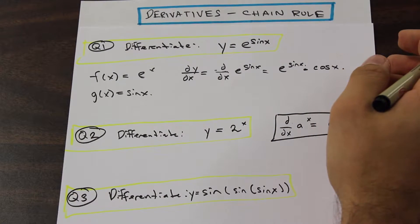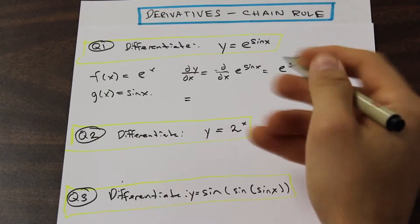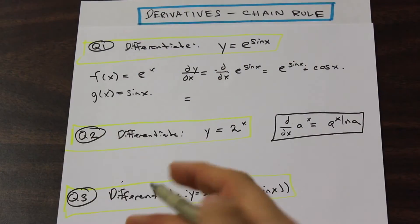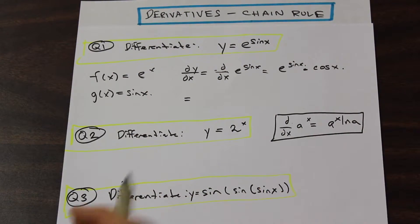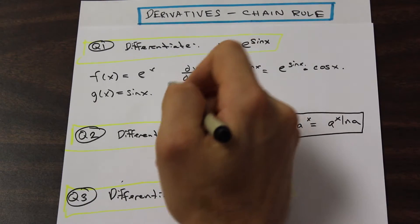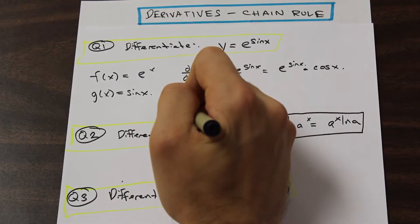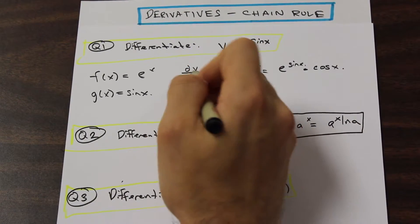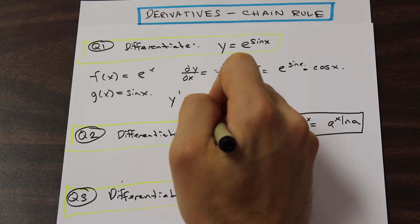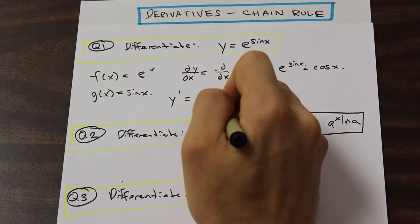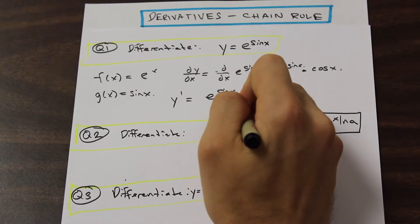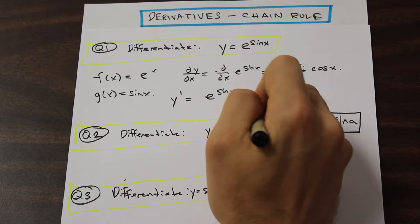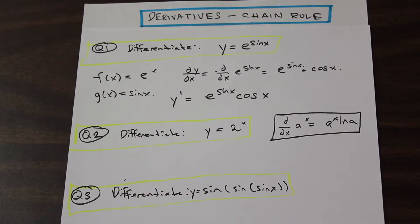That gives us our answer. It's a fairly simple and quick problem, but it's something that might throw you off if it's put into a problem with another composite function. So we can write it as y prime equals e to the power of sine x times cos x. And that's the solution for question one.